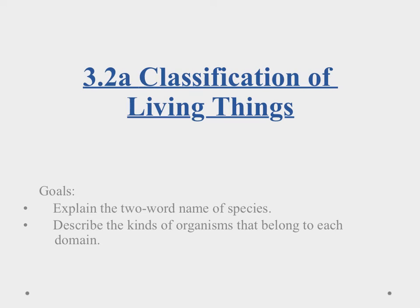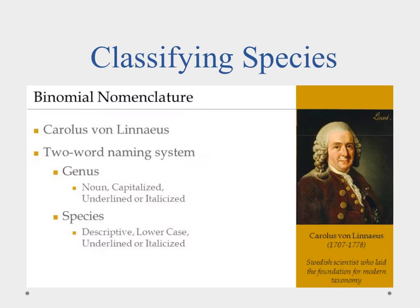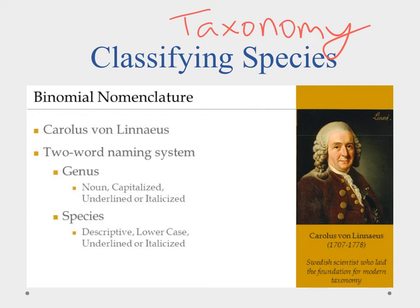Aloha and welcome to the classification of living things video. In this video we'll explain the two-word name of species and we'll also describe the kinds of organisms that belong to each of the three domains. When we start talking about classification of species, what we're talking about is the science called taxonomy, and taxonomy was started by Carolus Linnaeus, a Swedish scientist who took it upon himself to try and name all of the known species at the time.